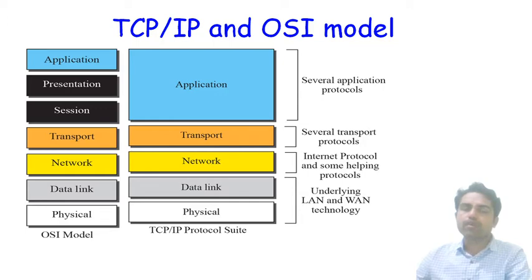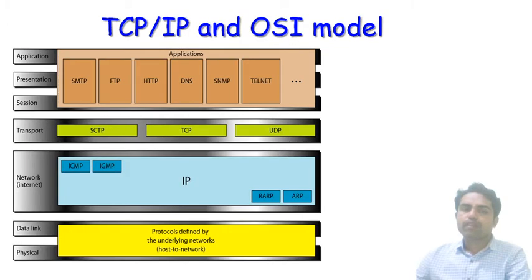Comparing OSI and TCP/IP: in TCP/IP, the session, presentation, and application layers of OSI are combined into a single application layer, so TCP/IP has only five layers. The physical and data link layers underlie LAN and WAN technology. The network layer is the internet protocol layer with some helping protocols. The transport layer has several transport protocols, and the application layer has several application protocols.